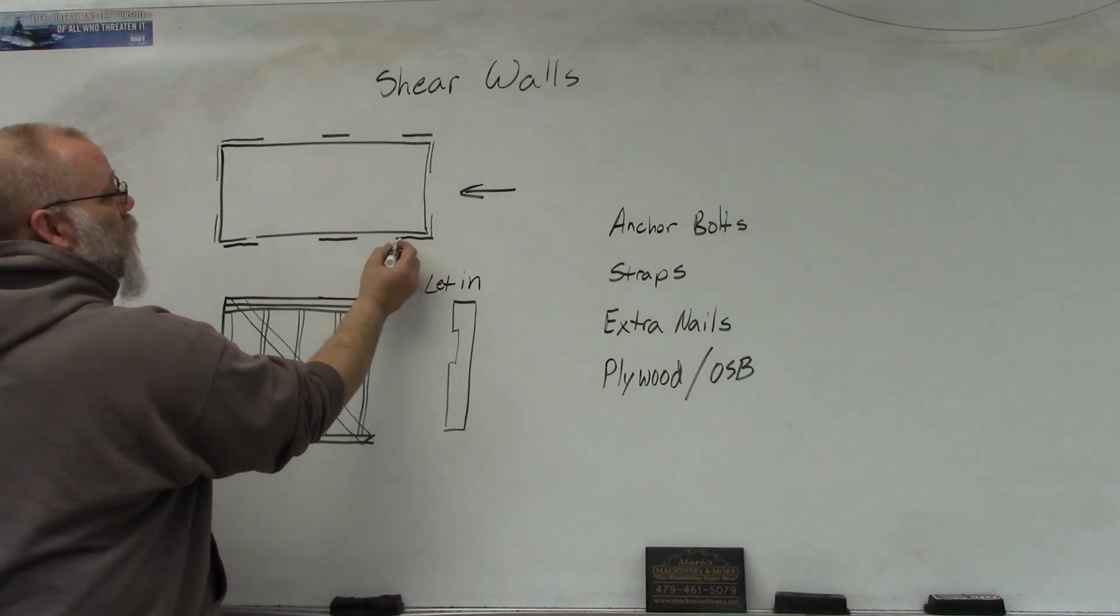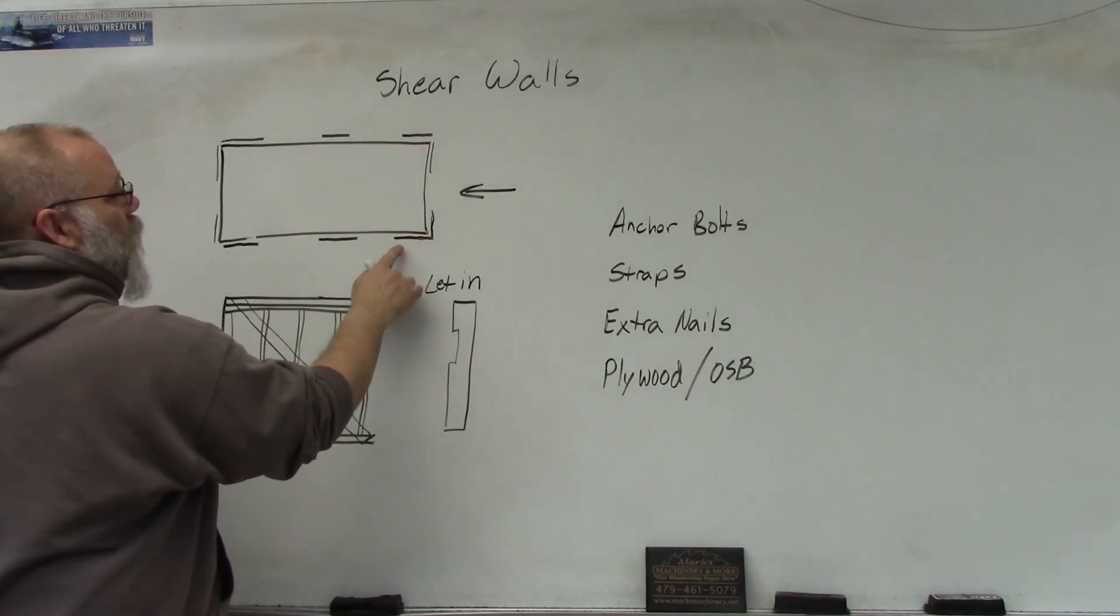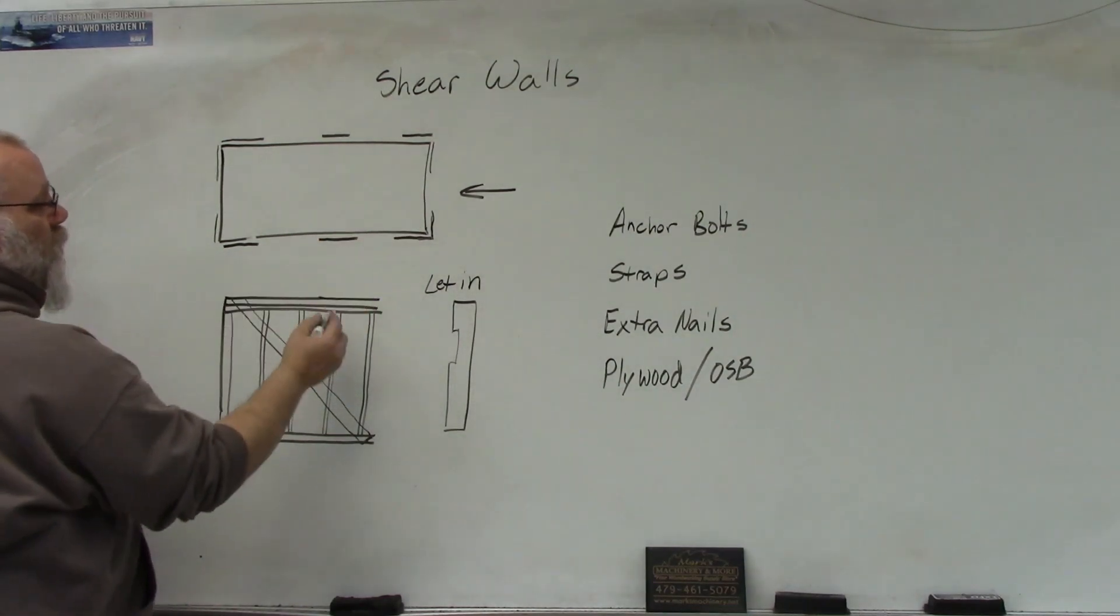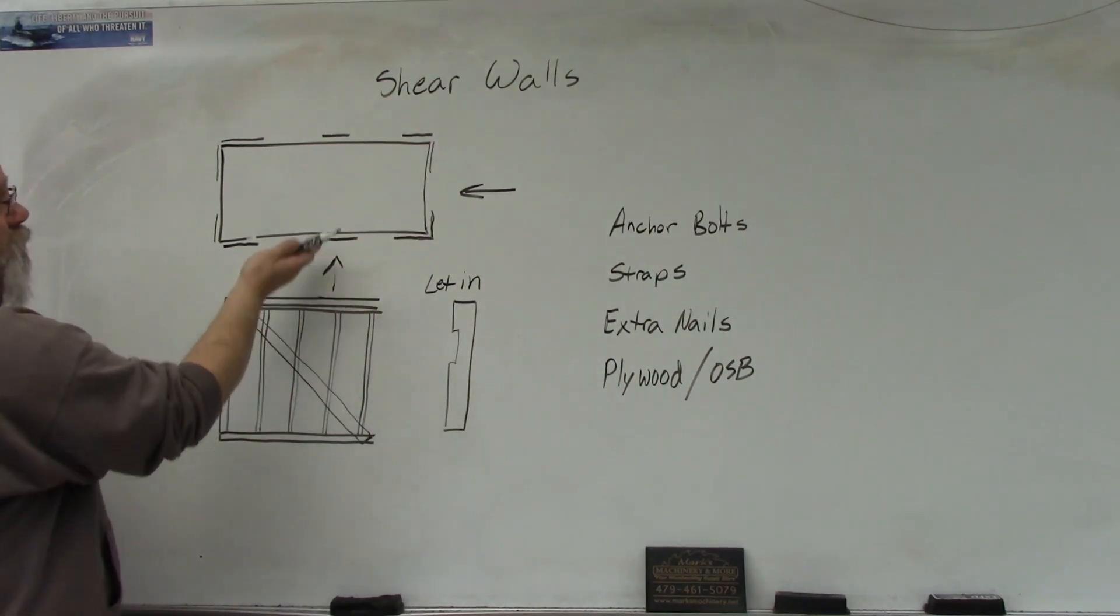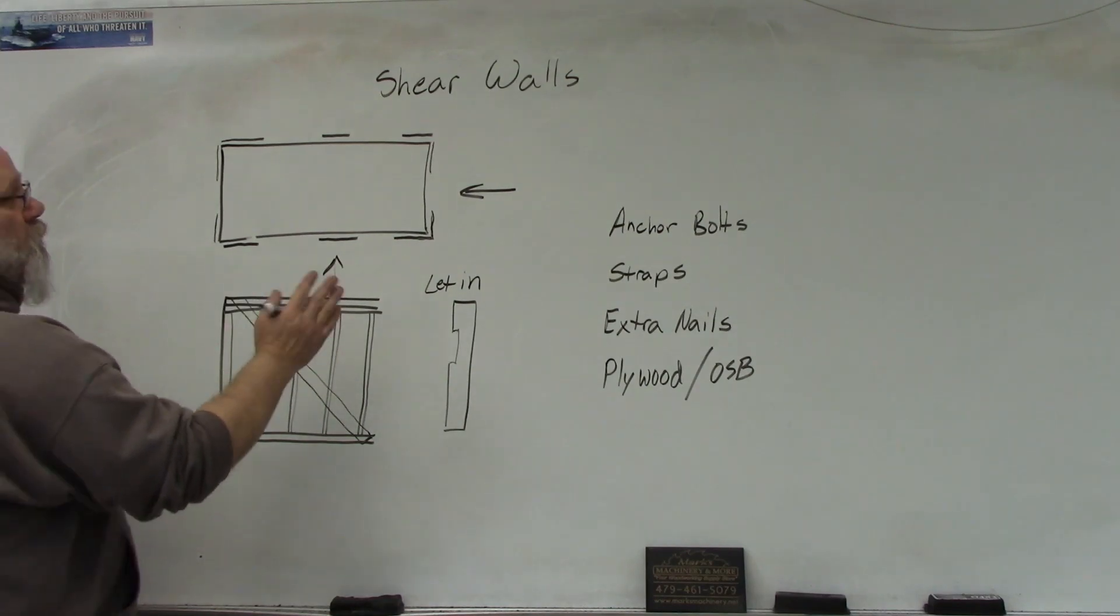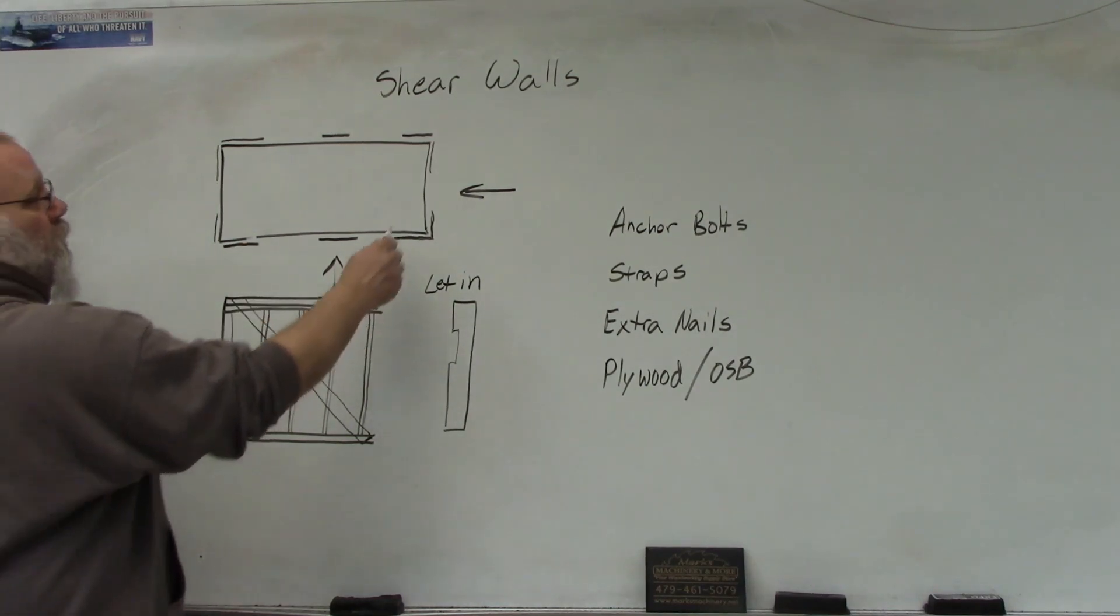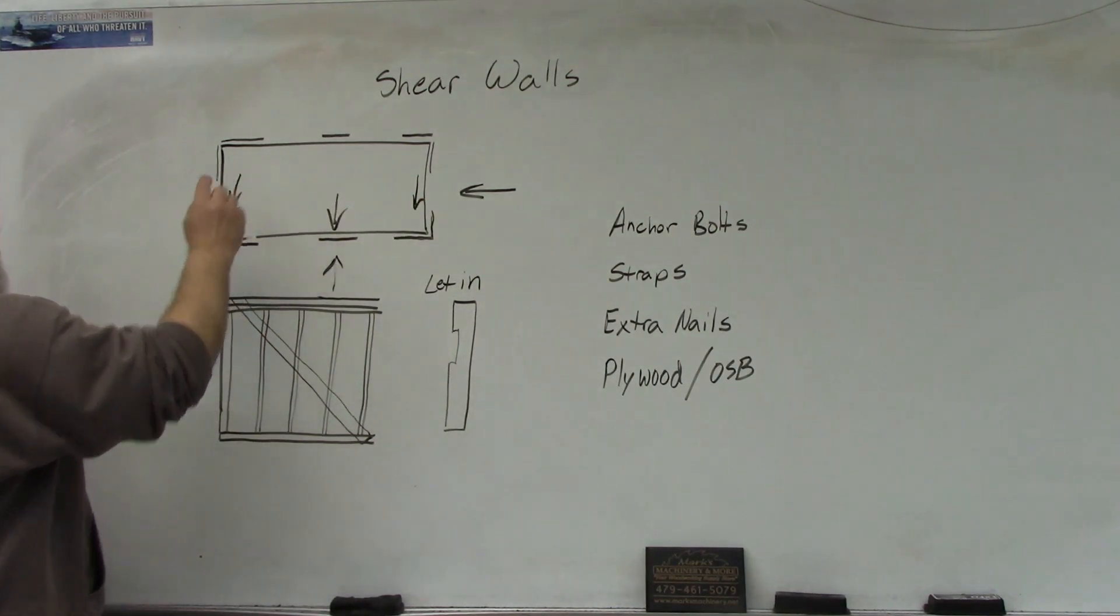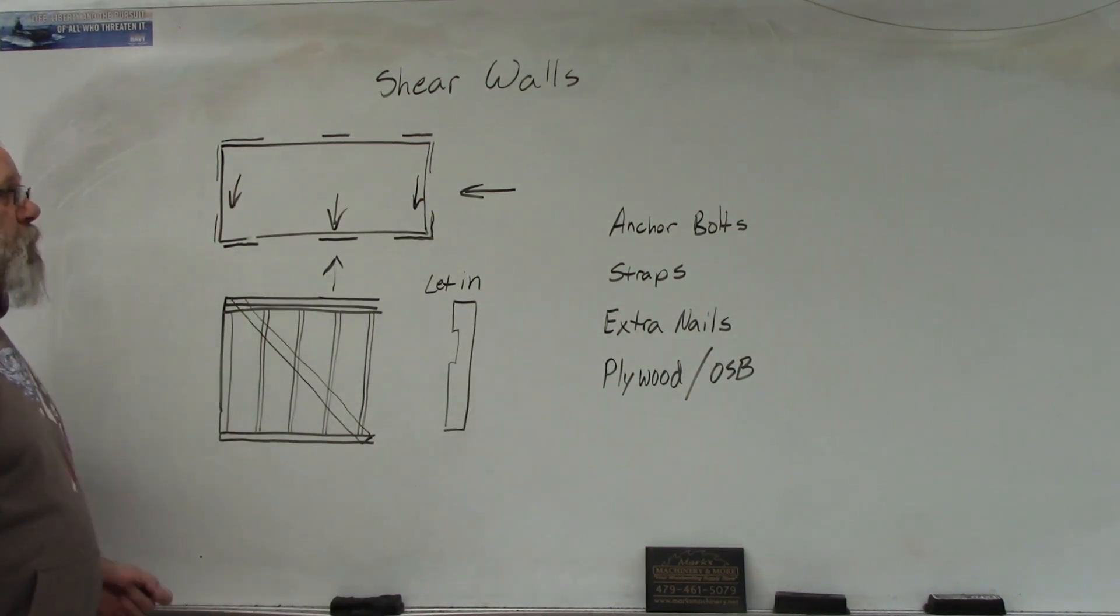So what they do is they put shear walls on the corners of your houses. Whichever direction the wind is coming from, it will keep the house from getting pushed over. The force will be against it so the house will stay in place.